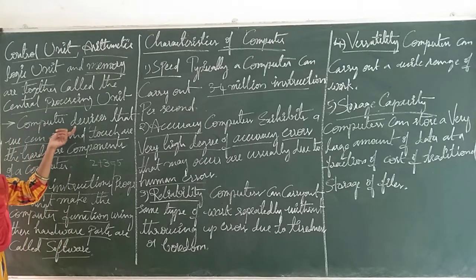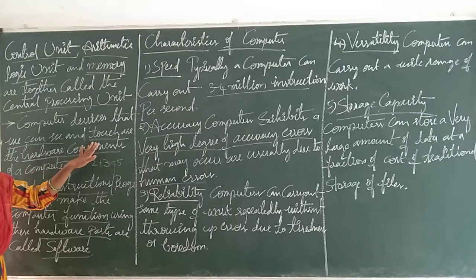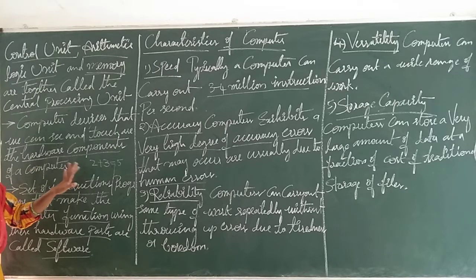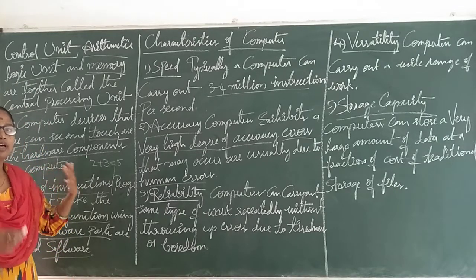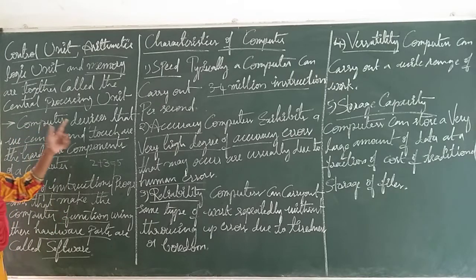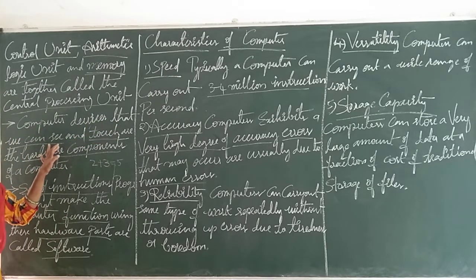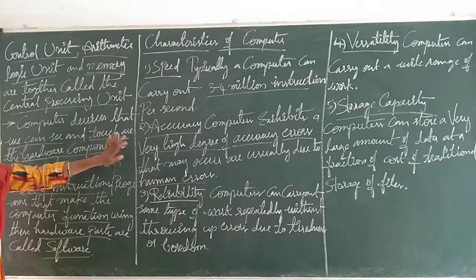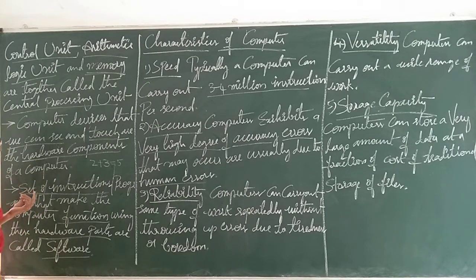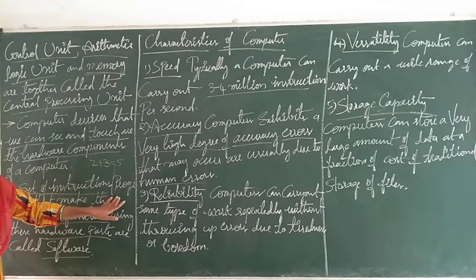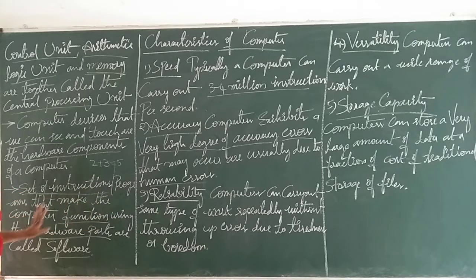Computer devices that we can see and touch are the hardware components of a computer - like the monitor, printer, keyboard, mouse, etc. A set of instructions or programs that make the computer function using these hardware parts are called software.